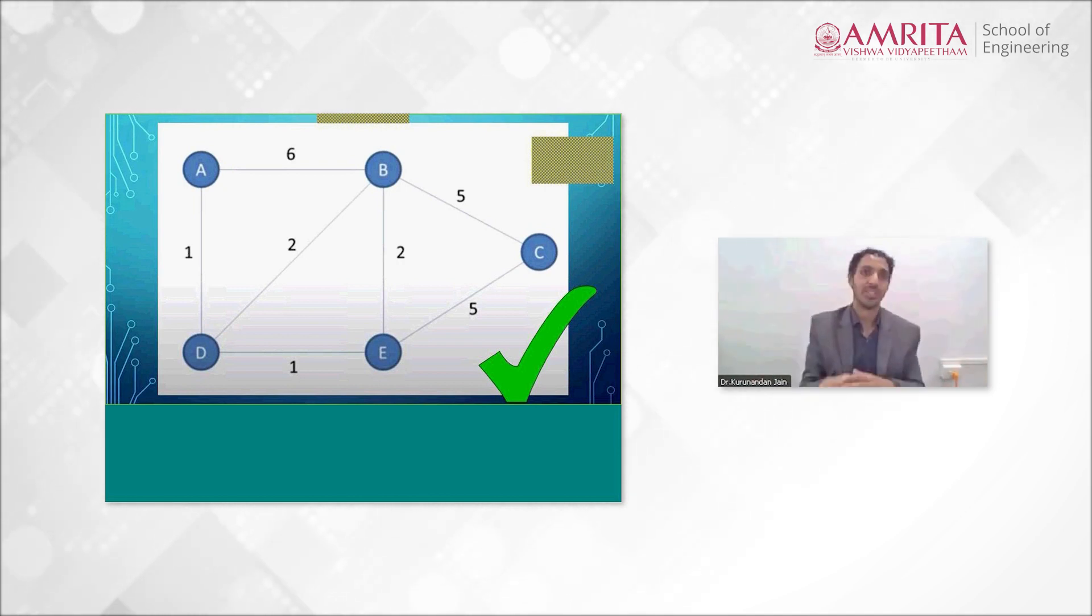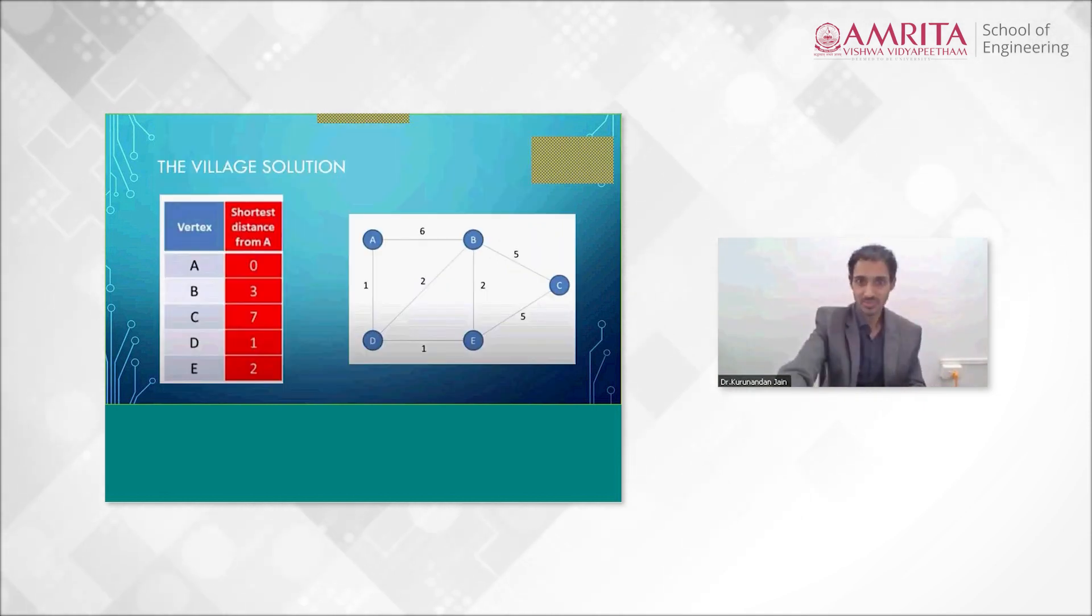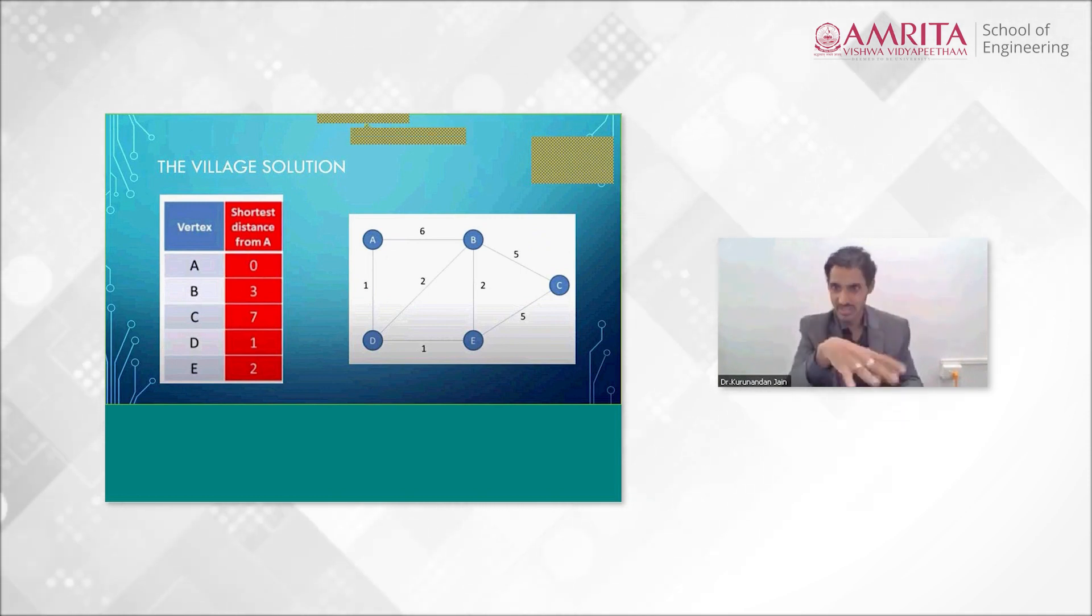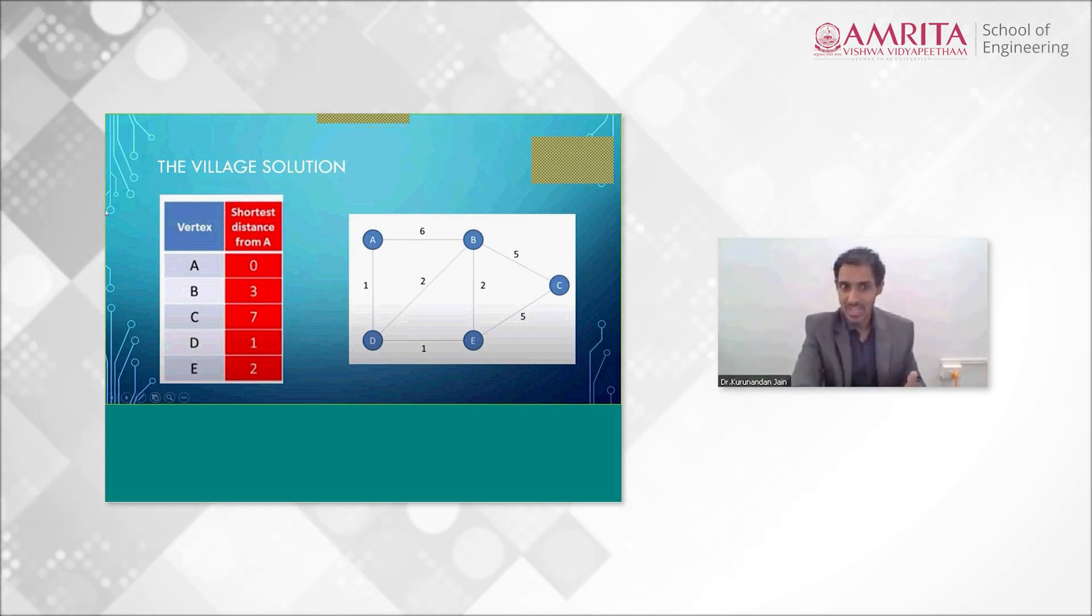Let's look at this example. I start from point A and we draw this nice table on the left-hand side. Obviously, if I'm already at point A, I don't have anywhere to travel. So the distance from A to A is zero. Now, the distance from A to B, you believe is six, right?